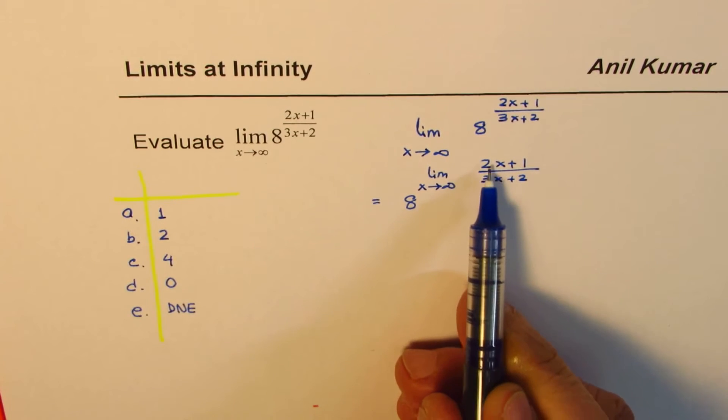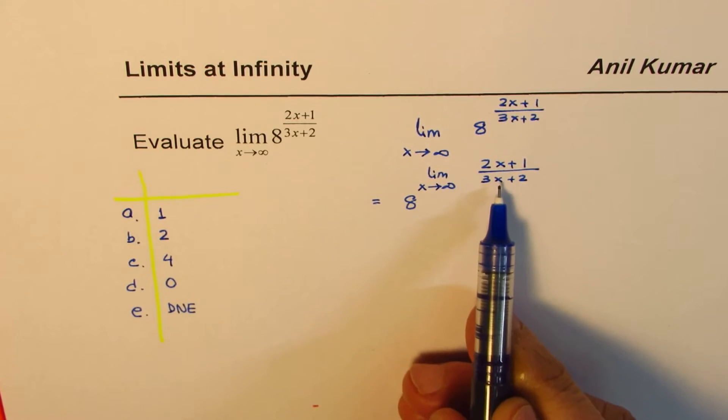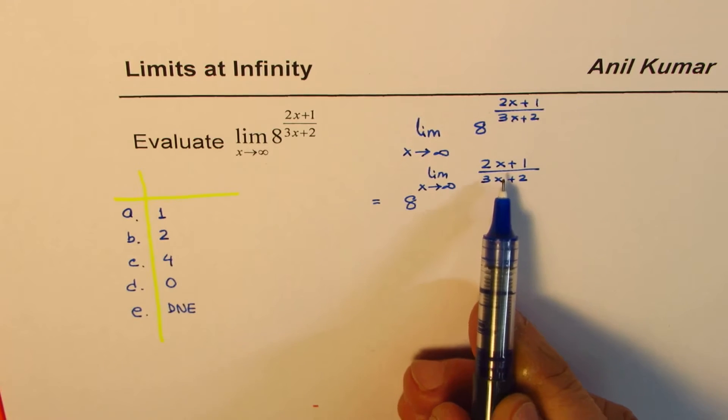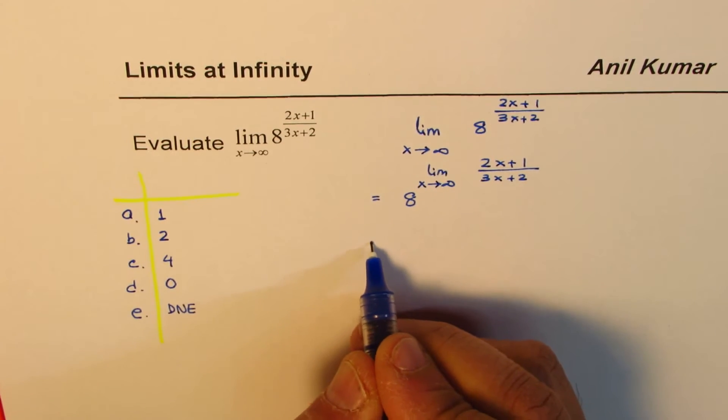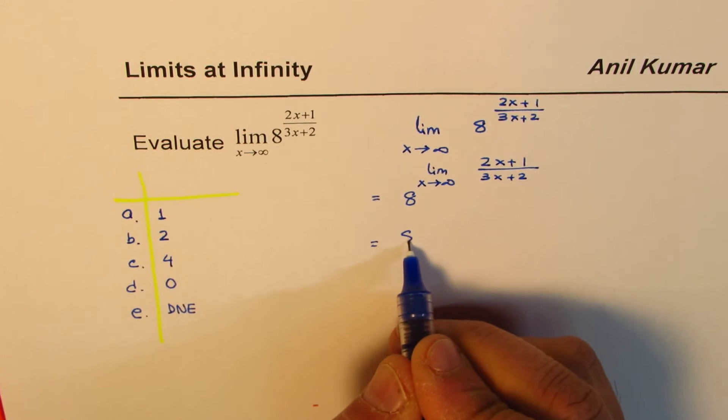Now, when these degrees are the same, then the limit approaches the leading coefficient ratios. But let me go through a few steps where this becomes absolutely clear.